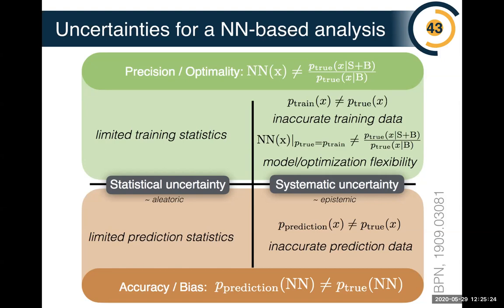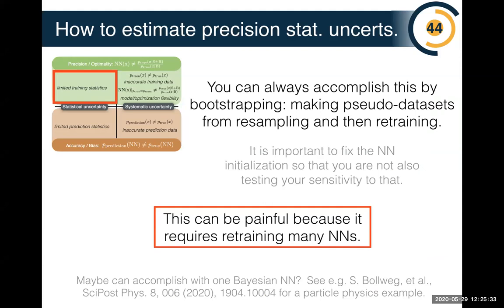For the top-left box — statistical uncertainty on precision — this is due to limited training statistics. You can estimate it by bootstrapping: create many pseudo-datasets, resample, and retrain to get the spread in your classifier output. This can be painful since it requires training many neural networks, but it's straightforward in principle. There may be clever ways to avoid retraining using Bayesian neural networks and other approaches.